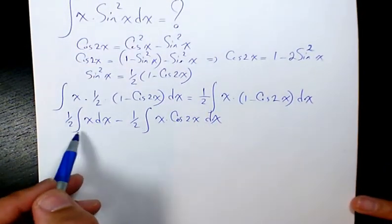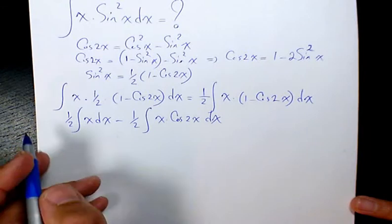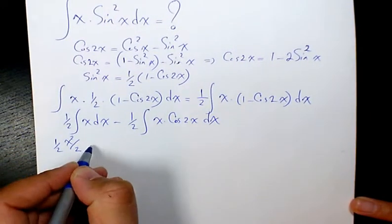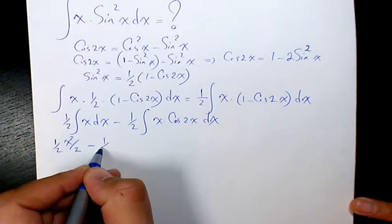Then I can integrate this part, so it will be 1 over 2 x squared over 2, and here we have 1 over 2.